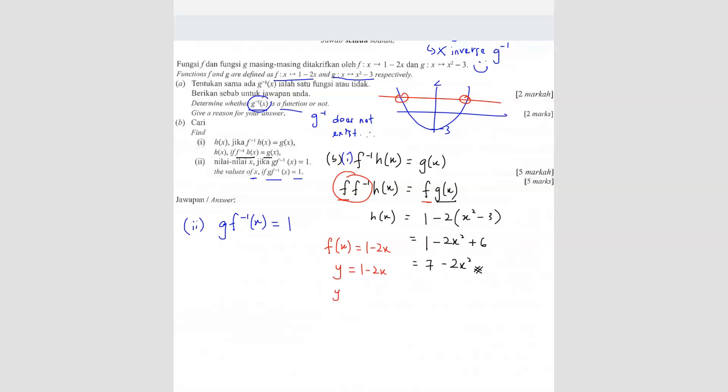From here, we know y. We can write x = (1 - y)/2. So this will be your f inverse: (1 - x)/2. We are going to substitute this x into the g(x).